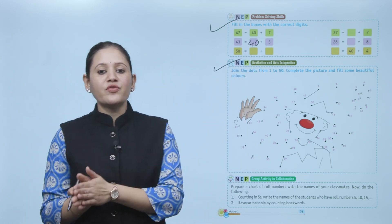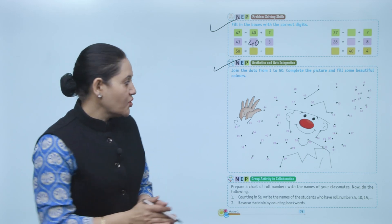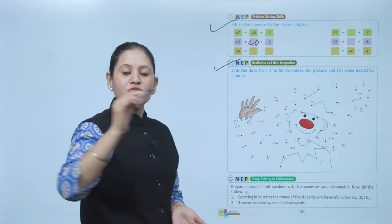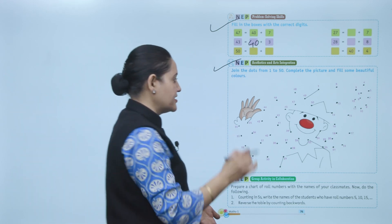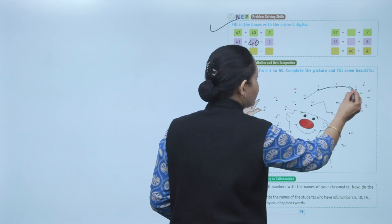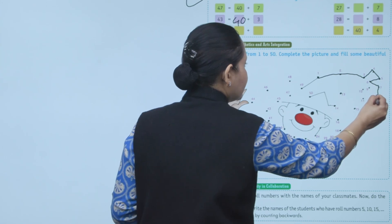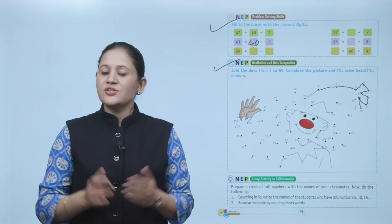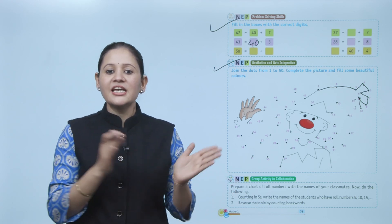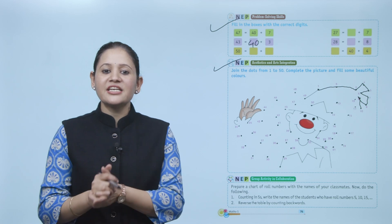Next is aesthetics and art integration. Join the dots from 1 to 50, complete the picture, and fill in some beautiful colors. Simply start counting from number 1, then 2, 3, 4, 5 — like this. So here: 1, then 2, then 3, 4, 5, 6, 7, 8, 9, 10. Like this you have to join numbers up to 50, complete the picture, and color it nicely.